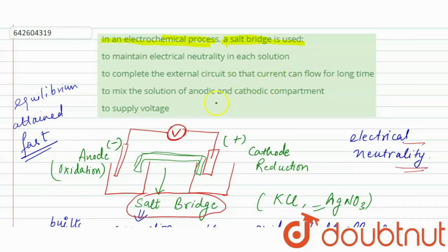So, in this we have four options. First is to maintain electrical neutrality in each solution. So, it is our correct option. To complete the external circuit. Okay. No. It completes the internal circuit of an electrochemical cell. So, it is wrong. To mix the solution of anodic and cathodic. No. It is also wrong. To supply voltage. To supply voltage already voltmeter is used in an electrochemical cell. So, our correct option is to maintain electrical neutrality in each solution. So, this is our correct answer.